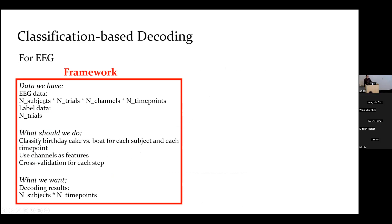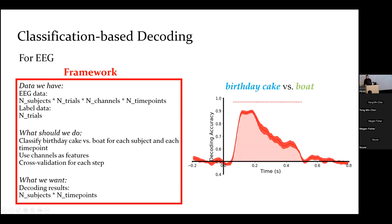Here is the framework. If we have EEG data with this format and label data for each trial, what we want to do is classification for each time point for each subject, using channels as features with cross-validation. The final goal is to get the decoding accuracy — a matrix of subjects by time points. The final results look like this: if we have 10 subjects, we get 10 curves and combine them. The error bar is the SEM of the decoding accuracy for each time point.